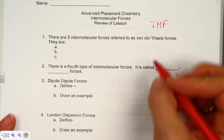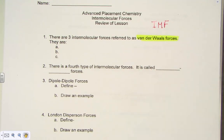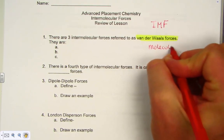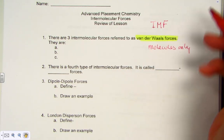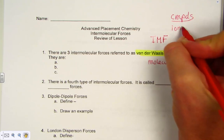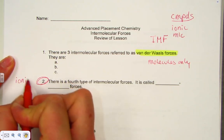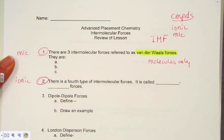We have three intermolecular forces that are categorized as Van der Waal forces — that might be a brand new term from the note pack lesson. Van der Waal forces are very specific to molecules only. One of our intermolecular forces is specific to ionic compounds, and three are unique to covalently bonded molecules — compounds can either be ionic or molecular.